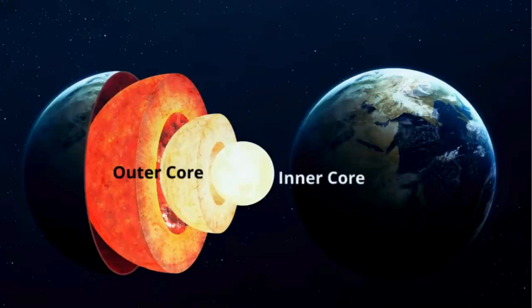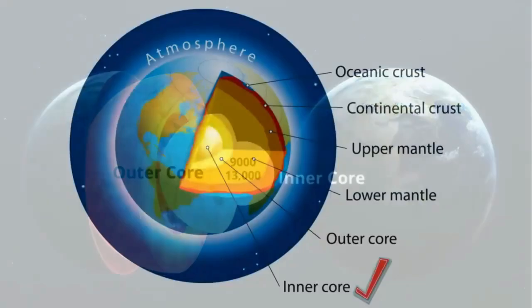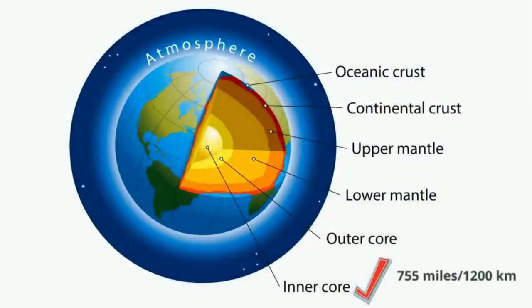The inner core is the hottest part of our planet and has temperatures between 9,000 and 13,000 degrees Fahrenheit. It's a solid layer around 755 miles or 1,200 kilometers thick and is composed mostly of iron. This iron is under so much pressure that it stays as a solid.